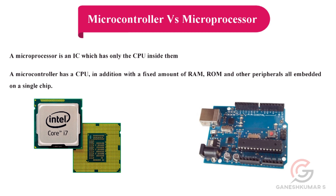A microcontroller has a CPU along with a fixed amount of RAM, ROM, and other peripherals also available inside the chip. This is the main difference between a microcontroller and a microprocessor. I hope you now understand the difference between them.